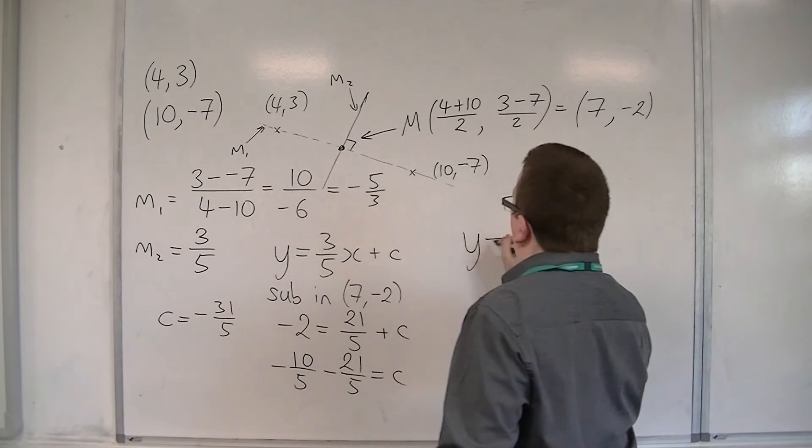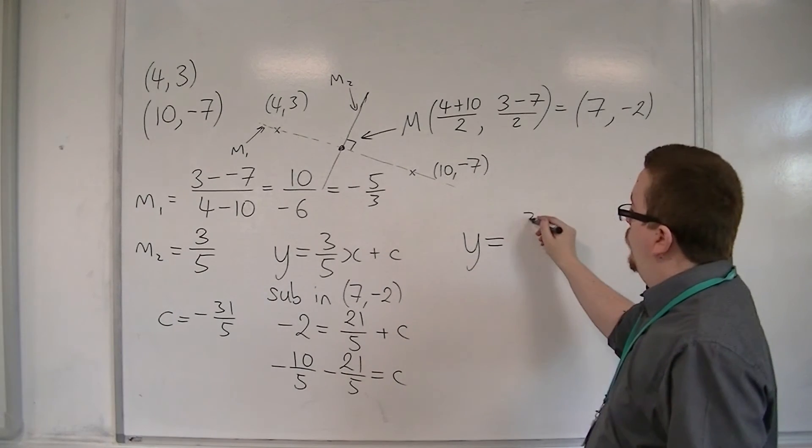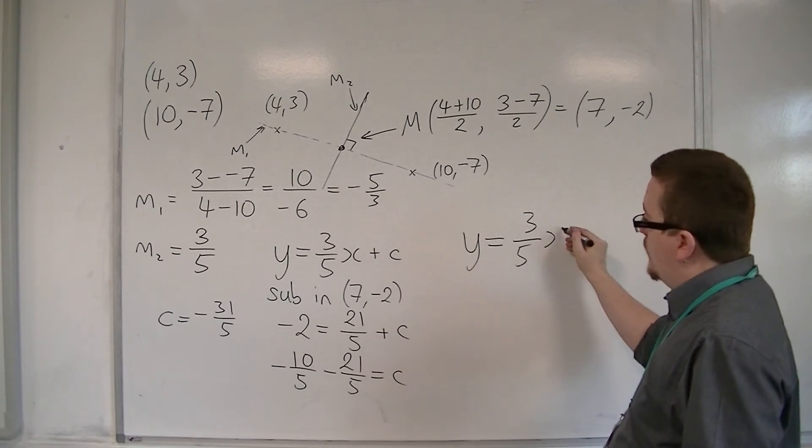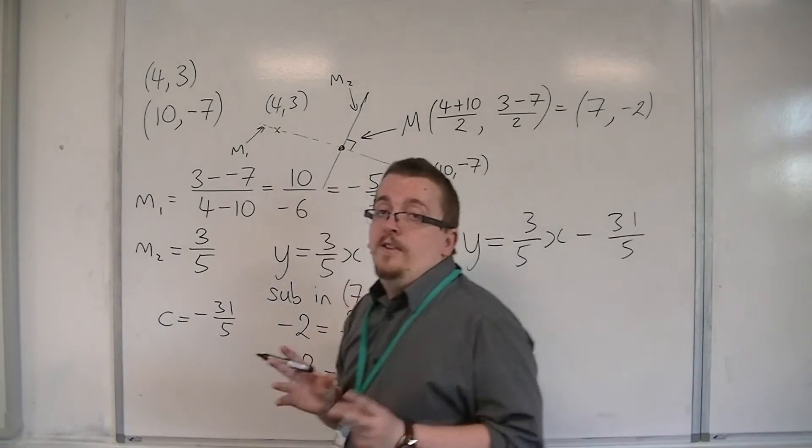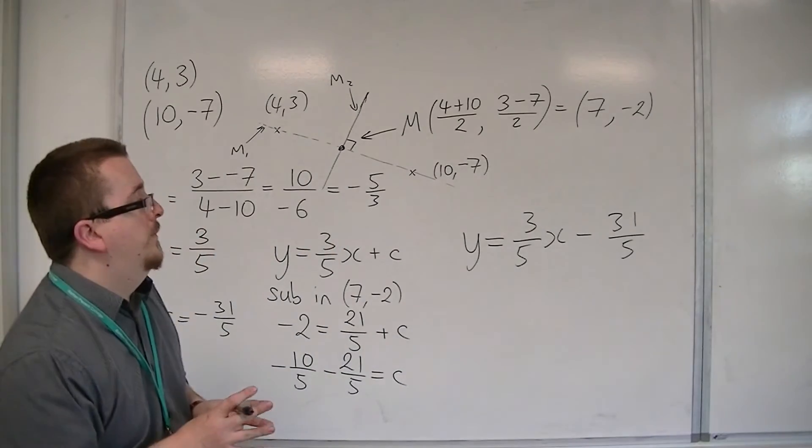The equation of the perpendicular bisector is y is equal to 3 fifths x minus 31 over 5. And that is the equation that I was looking for.